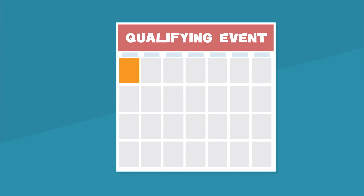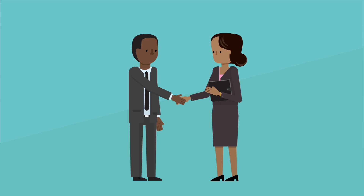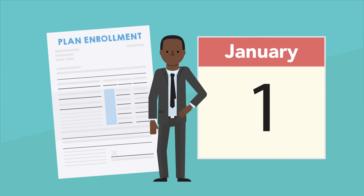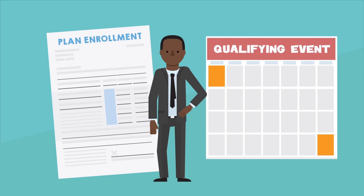Once you have confirmed you have a qualifying life event, you typically have 30 days from the date of the event to report it and make the desired changes to your benefits. To sum it up, you can make changes to your benefits when you're first hired, on your annual enrollment date, or within 30 days of a qualifying life event. Check with your HR department for a complete list of qualifying life events.